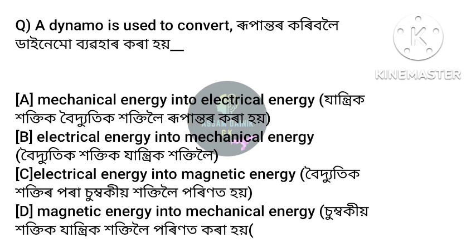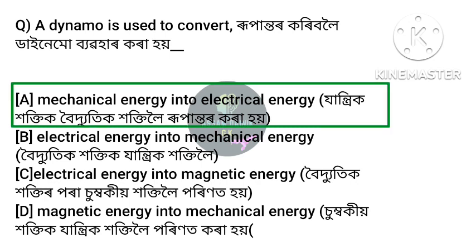Option A: mechanical energy into electrical energy. The conversion of mechanical energy into electrical energy is done by a dynamo. A dynamo is used for this conversion.